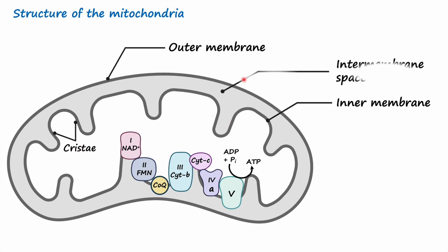The intermembrane space is the space between the inner membrane and the outer membrane. The mitochondrial matrix is the space inside the inner mitochondrial membrane and contains most of the enzymes involved in the TCA cycle as well as those involved in fatty acid oxidation. Now let's start talking about the electron transport chain.